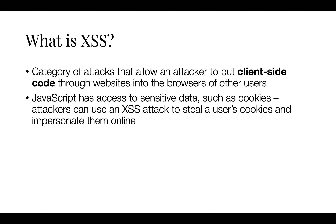Also important to note is that JavaScript can create HTTP requests, which can be used to send data back to the attacker. Additionally, client-side JavaScript can also help an attacker gain access to APIs that contain sensitive data, such as webcam data, geolocation coordinates, and other sensitive information.